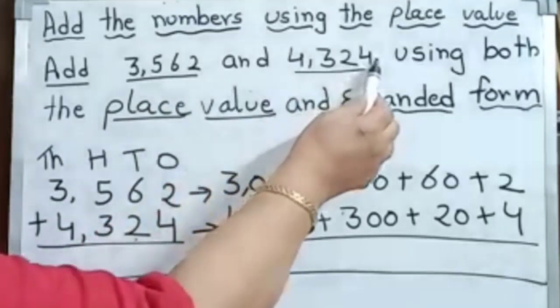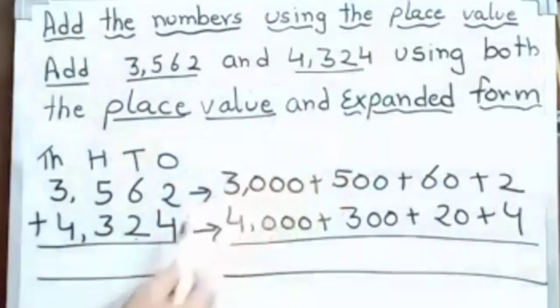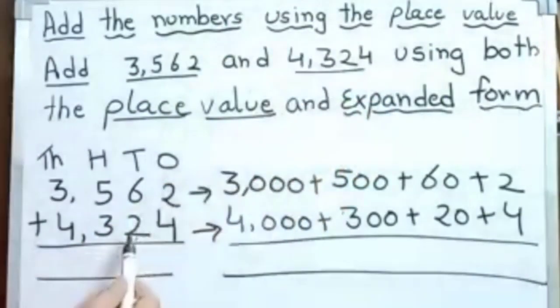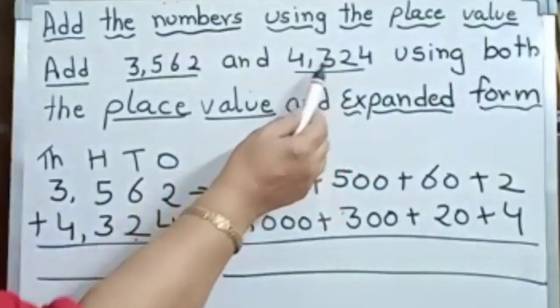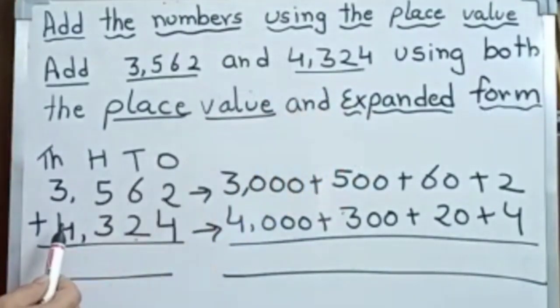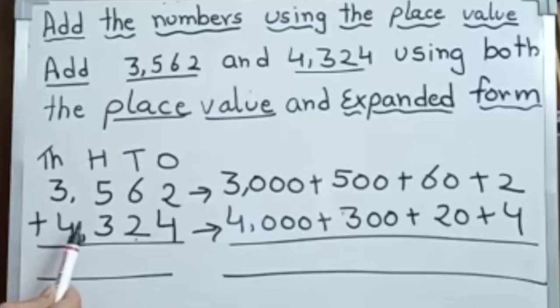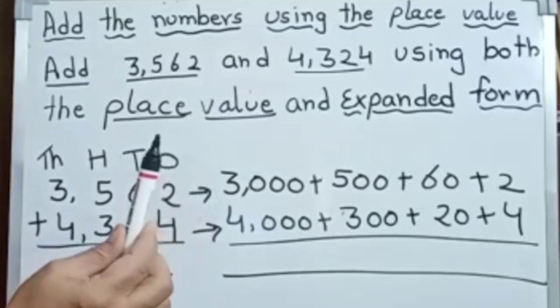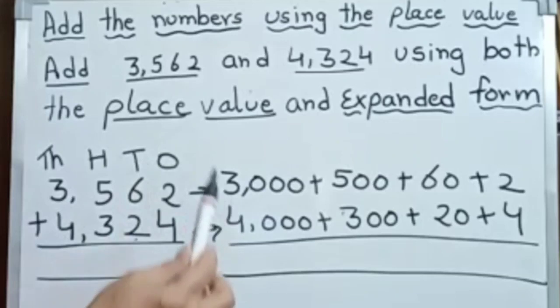Here: 4 in the ones place, 2 in the tens place, 300 place, 4,000 place. Now we have 4,324.